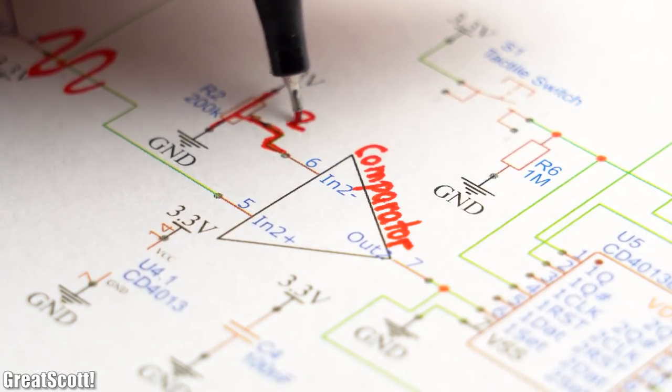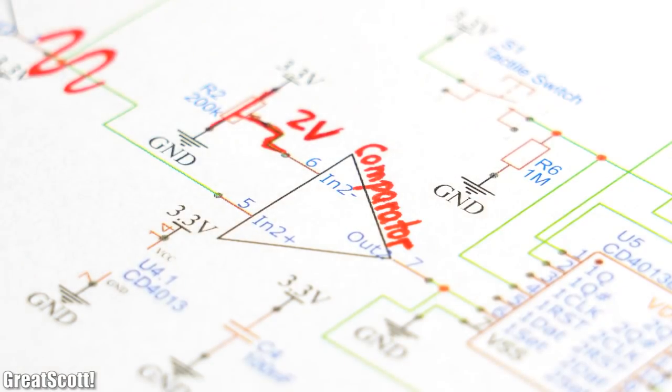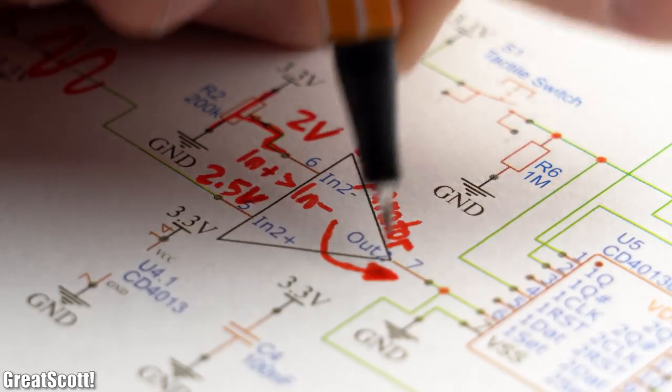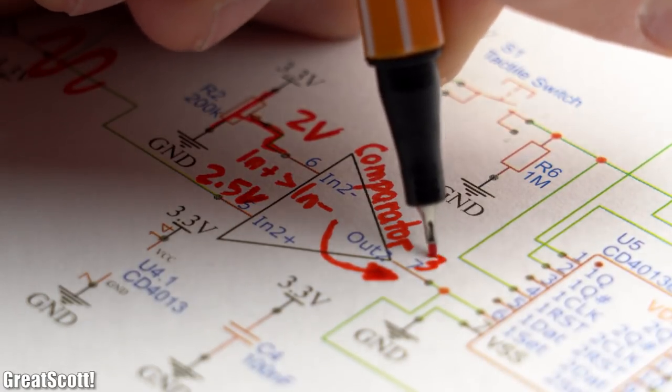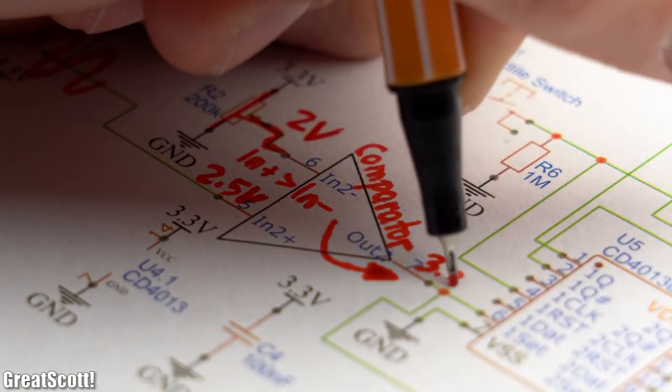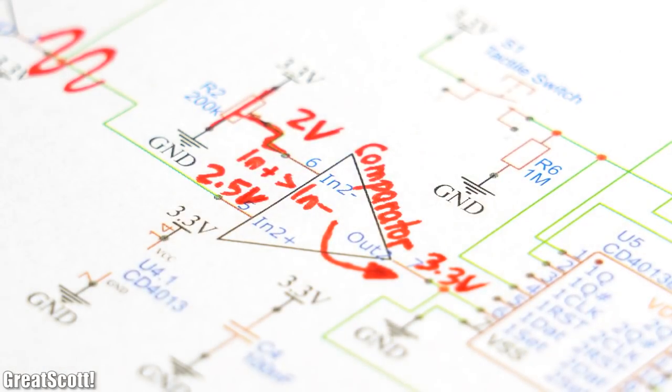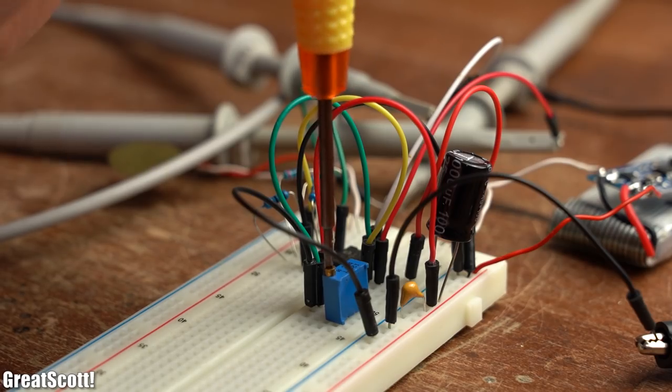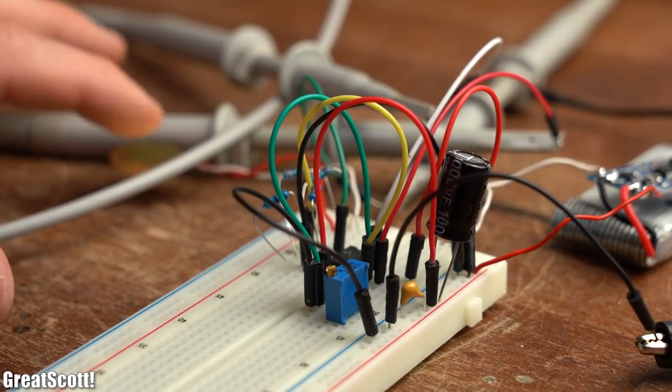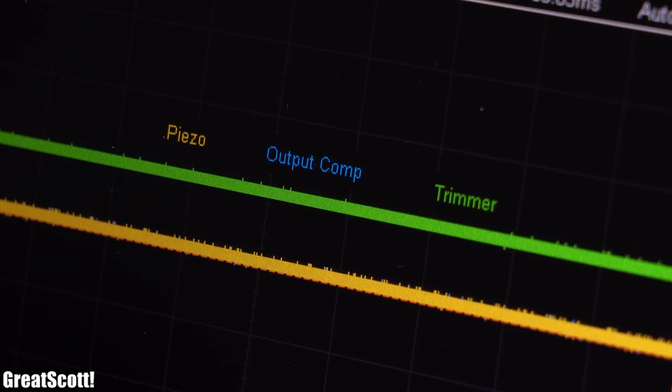That means we can adjust a voltage threshold with the trimmer on the inverting input, and as soon as the piezo voltage is higher than the threshold voltage, the output of the comparator gets pulled up to 3.3V. After building up the comparator on the breadboard, we can see that the just described action works and looks like this on the oscilloscope.